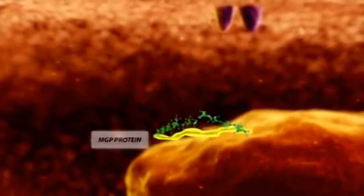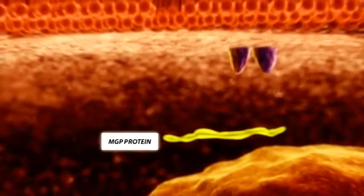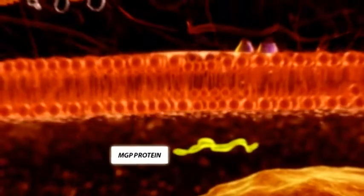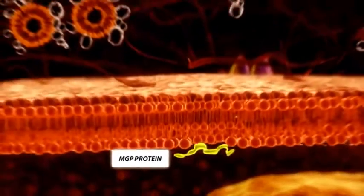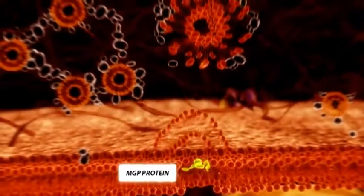When calcifications are present, MGP is present in the inactive, unable to prevent the crystal growth mode. Supplementation with natural MeniQ7 will reach the vessel wall and the vascular smooth muscle cells. In these cells, the newly formed MGP is activated.